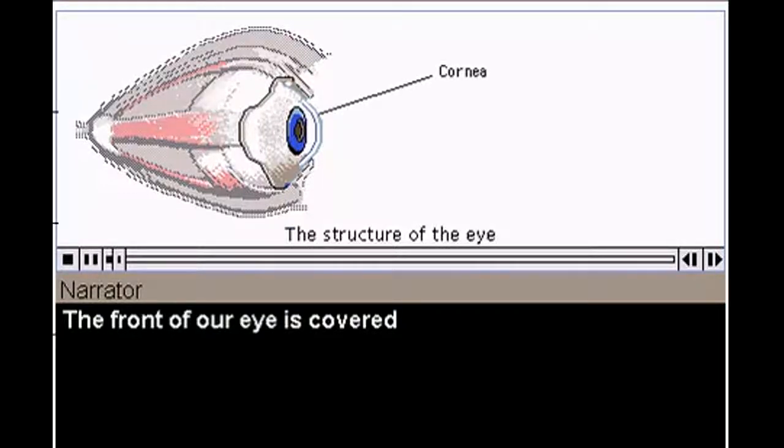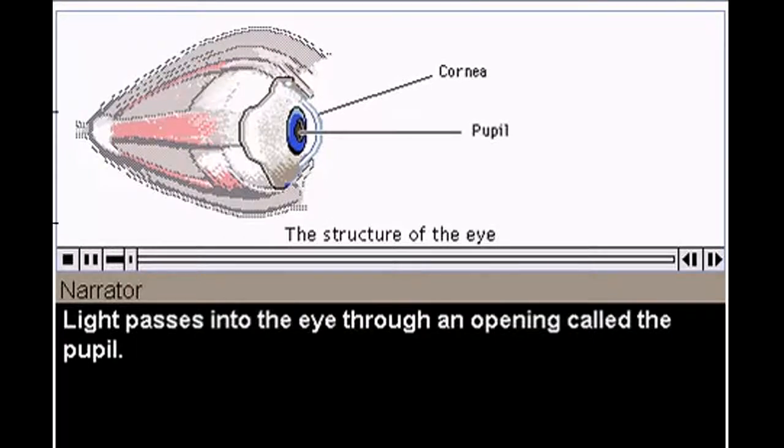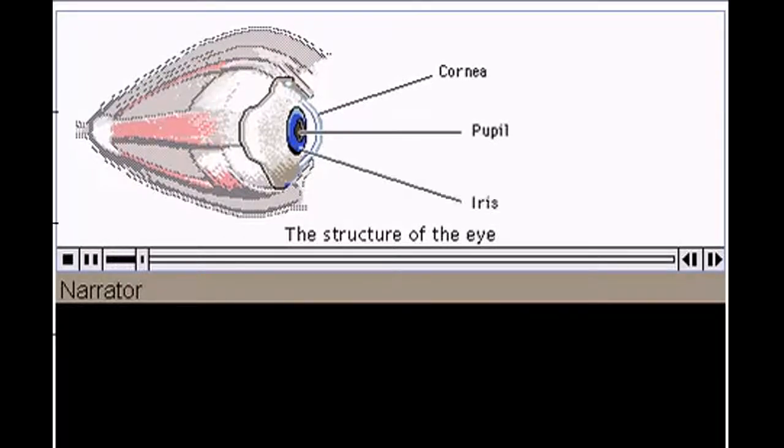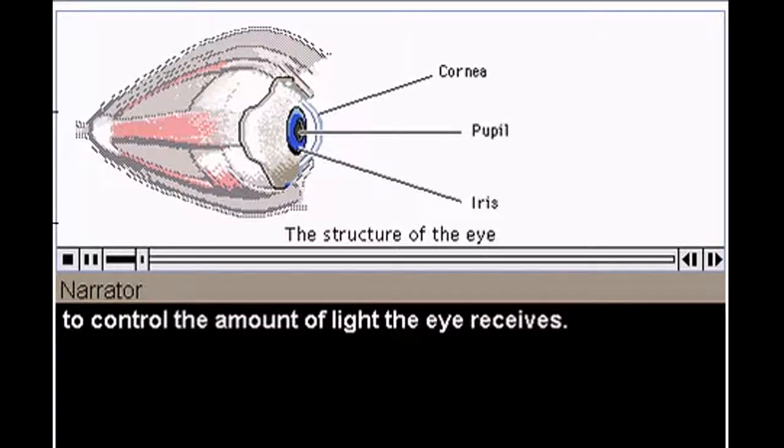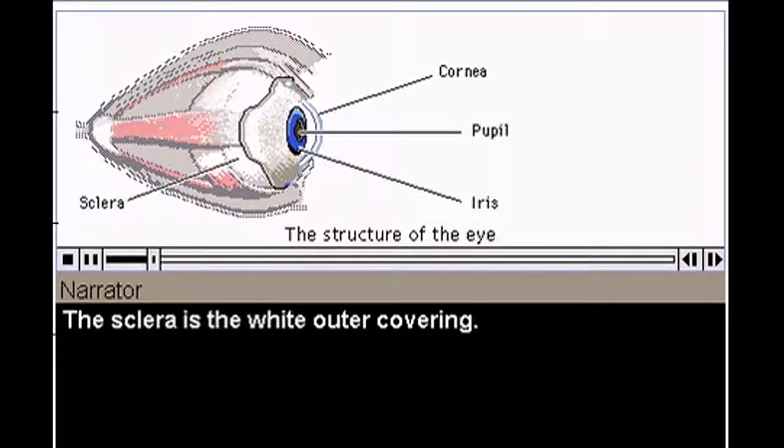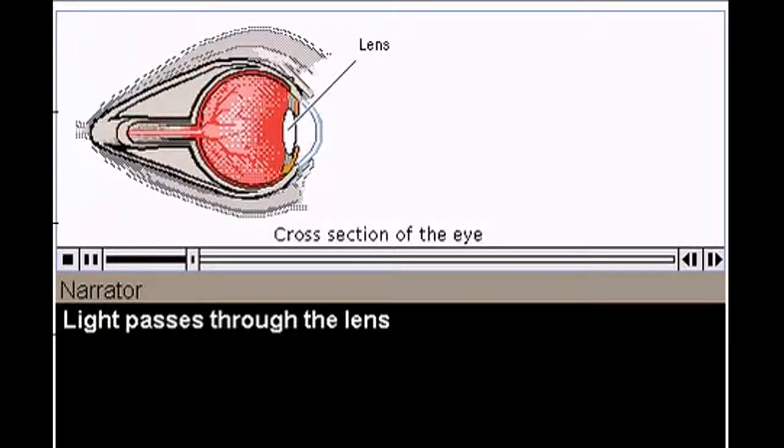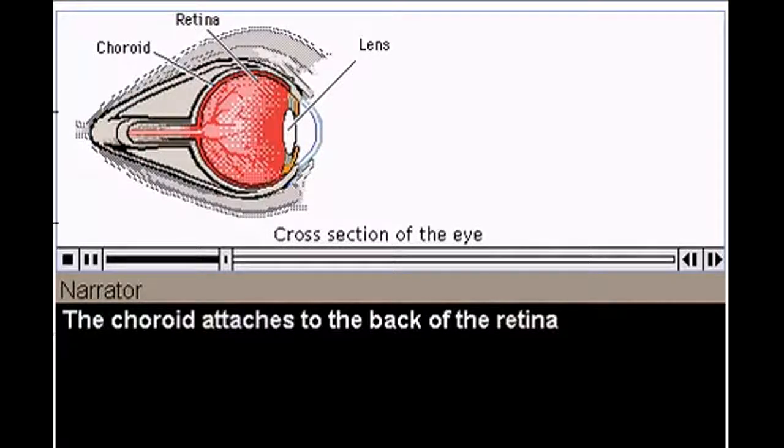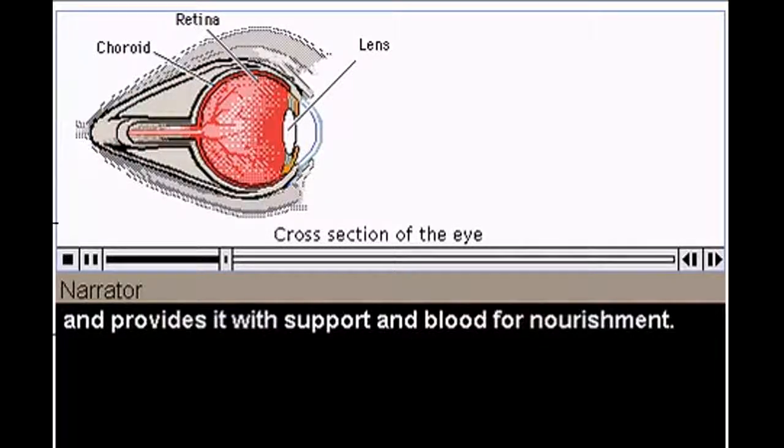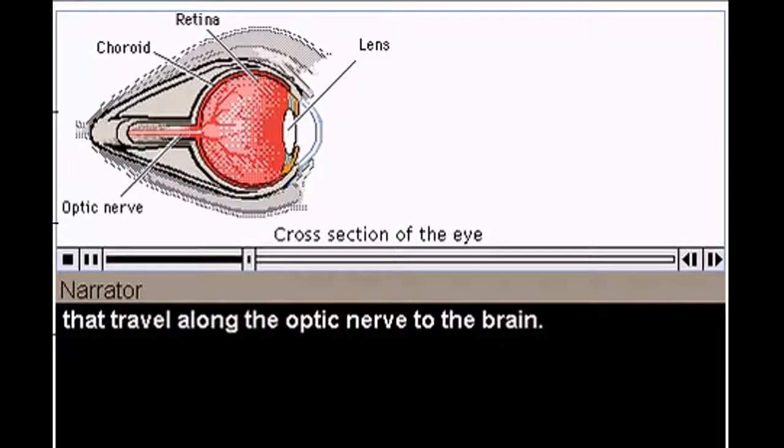The front of our eye is covered by a transparent membrane, the cornea. Light passes into the eye through an opening called the pupil. The iris surrounds the pupil, opening or closing in degrees to control the amount of light the eye receives. The sclera is the white outer covering. Movement of the eye is controlled by small muscles attached to it. Light passes through the lens, and onto the retina, in the back of the eye. The choroid attaches to the back of the retina, and provides it with support, and blood for nourishment. Light-sensitive cells in the retina produce electrical signals that travel along the optic nerve to the brain.